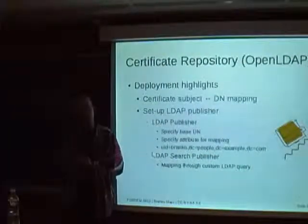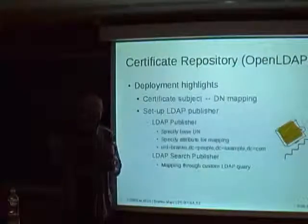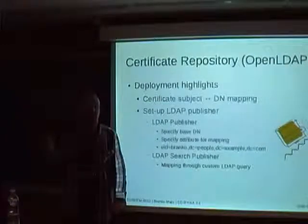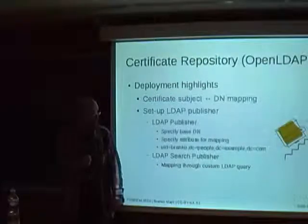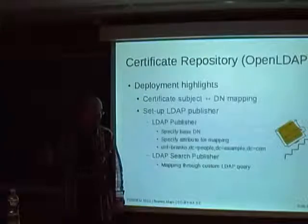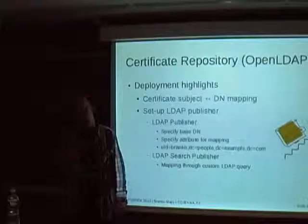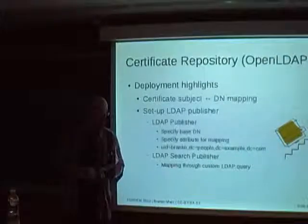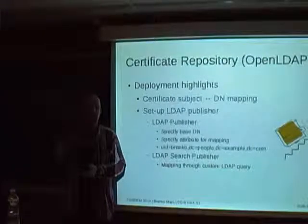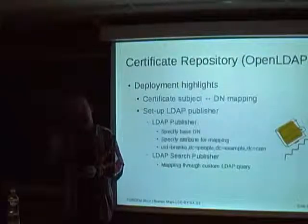It's also possible to use the LDAP search publisher, which allows you to perform mapping through a custom LDAP query. If you don't have one-to-one mapping, you can specify a custom LDAP query to determine the destination distinguished name where the certificate should be stored. I used this in one case where the certificate needed to hold a personal number stored in the UID field, but I also wanted to use that same field for the username. I resolved the conflict by using the employee number field in LDAP and performing a search to figure out the destination DN.